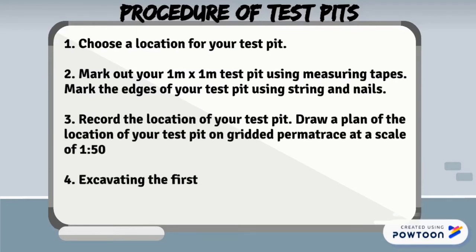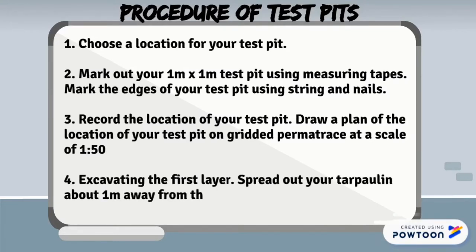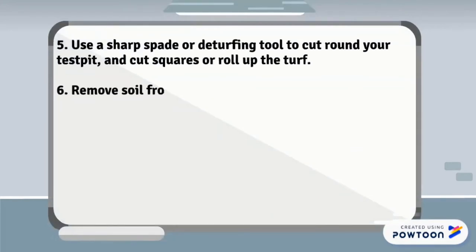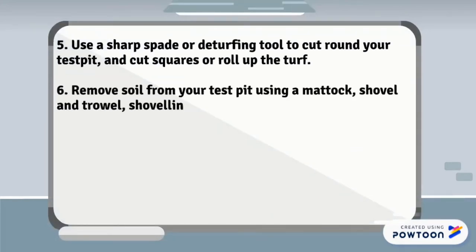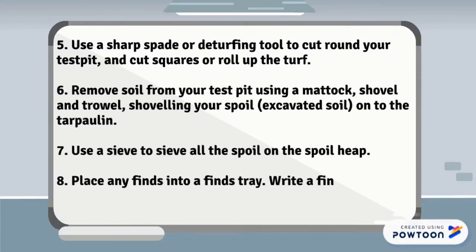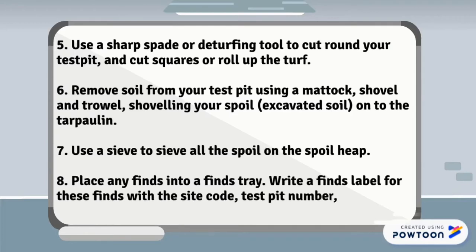Excavate the first layer and spread the topsoil about 1m away from the closest side of the test pit. Use a sharp spade or turfing tool to cut around the test pit and cut squares over the surface. Remove soil from the test pit using a mattock, shovel, and trowel. Use a sieve to sieve all the spoil on the spoil heap, place any fines in the fines tray, and write down the labels.